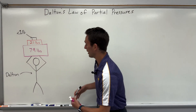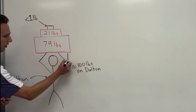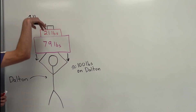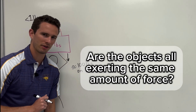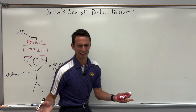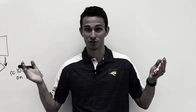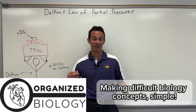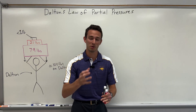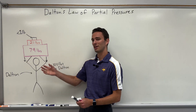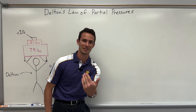Well, he's carrying about 100 pounds, obviously, because gravity is pulling down on these objects and exerting force on his body. But are they all exerting the same amount of force? Well, obviously not — you know that because they weigh different things. And this story sums up Dalton's Law. Hey everybody, Organized Biology here, and today we're going to run through Dalton's Law of Partial Pressures. Let me give you the definition quick, and then we're going to show how this diagram can be shown in a different type of diagram illustrating the same exact idea.